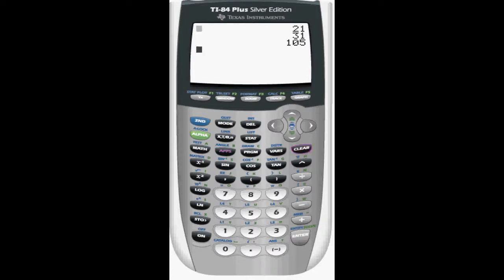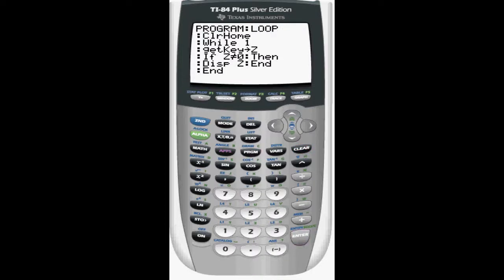But now you might think to yourself, how is it getting those values, or how do I know what key is what value if I'm trying to wait for a certain input within a program? Well, it's pretty simple. The keys are organized by rows.